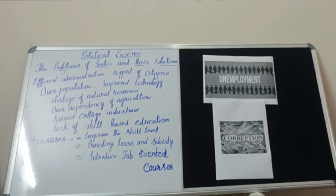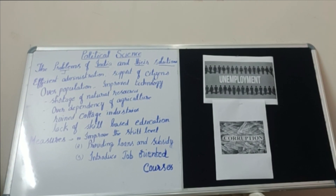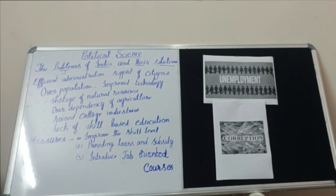The next cause for unemployment is shortage of natural resources. Natural resources are a gift of nature and are classified into exhaustible and inexhaustible resources. Exhaustible resources, once used up, cannot be replaced by nature or man, so we should be very careful in utilizing them. Some industries depend on natural resources as raw materials. As raw materials are getting exhausted day by day, these industries are not getting sufficient raw materials, and as a result, some of the industries are being closed.